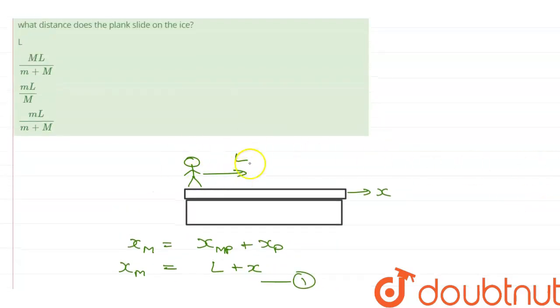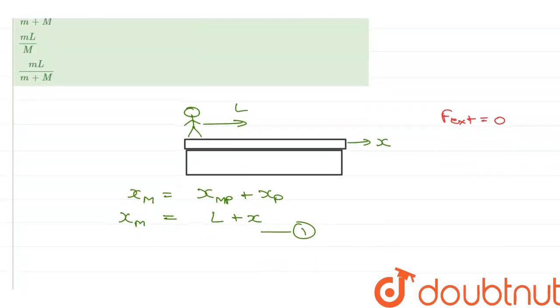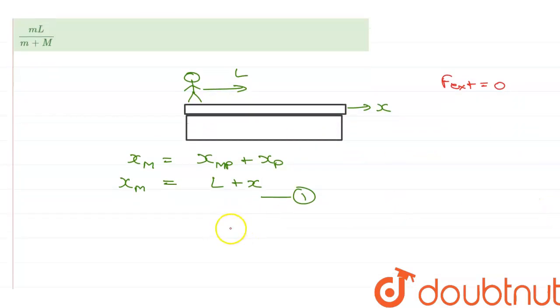Now, since there is no external force acting in the horizontal direction, and this entire system was initially at rest, the center of mass should also be at rest. That means the displacement for center of mass should be equal to 0.